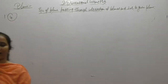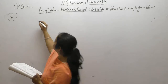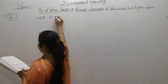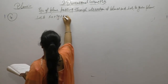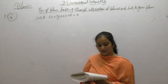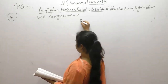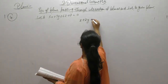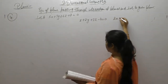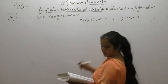Find the equation of the plane which is perpendicular to 5x plus 3y plus 6z plus 8 equals 0, and which contains the line of intersection of the planes x plus 2y plus 3z minus 4 equals 0 and 2x plus 5y minus z plus 5 equals 0.